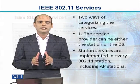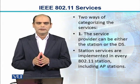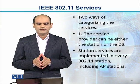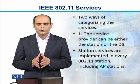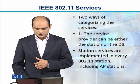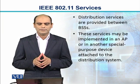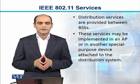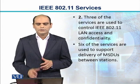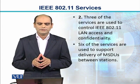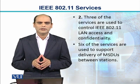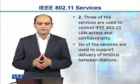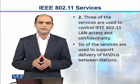There are two ways of categorizing the services. The first category is by provider: either the station or the distribution system. Station services are implemented in every 802.11 station including access point stations. Distribution services are provided by the BSS and may be implemented in an AP or a special purpose device attached to the distribution system. The second category: three of the services are used to control IEEE 802.11 LAN access and confidentiality, while the remaining six services support delivery of MAC service data units between stations.